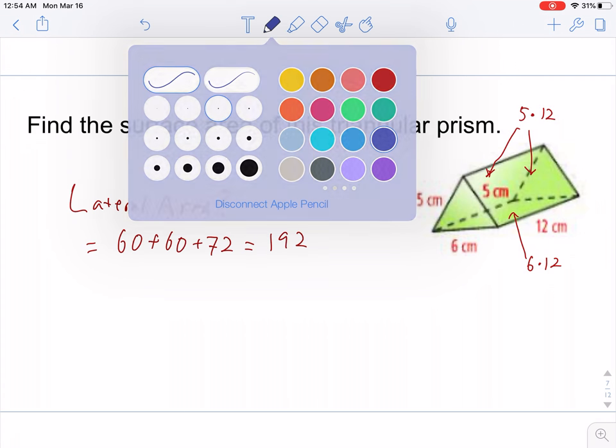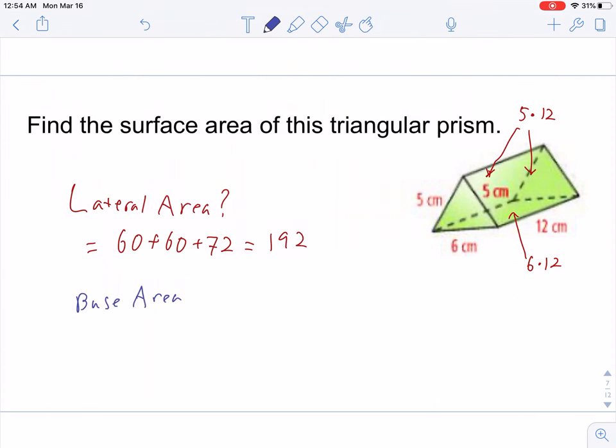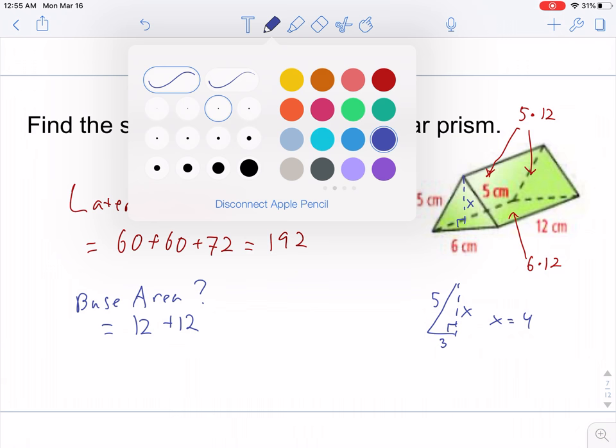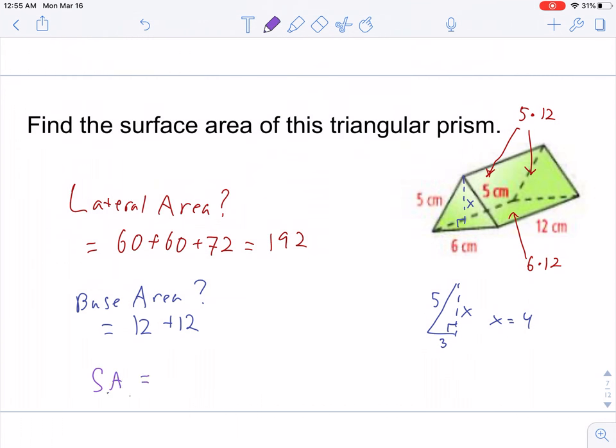How about the base area? Since these are isosceles triangles, we can figure out what the height is using the Pythagorean theorem. And then find the area of each triangle, which turns out to be 12. So, this means that the total surface area is going to be this plus 24, which would be 216 square centimeters. I'm not super worried about units until we get to the end.